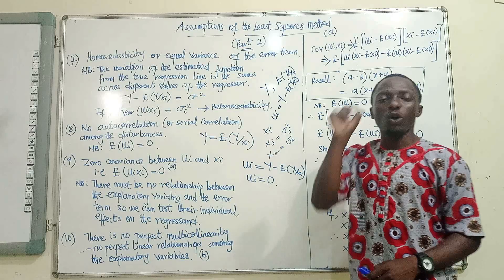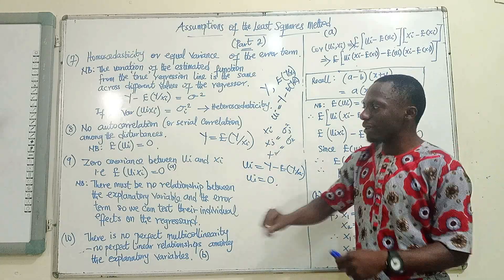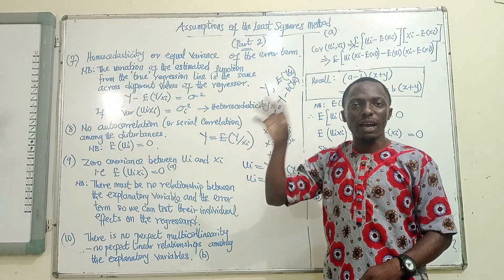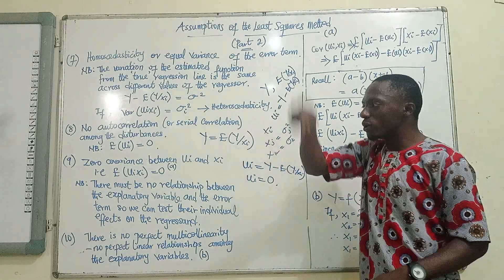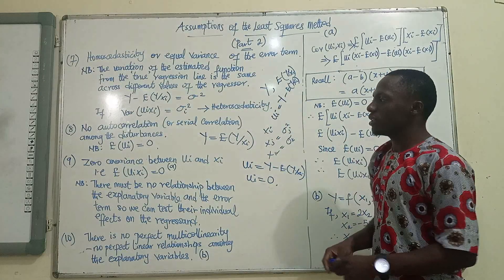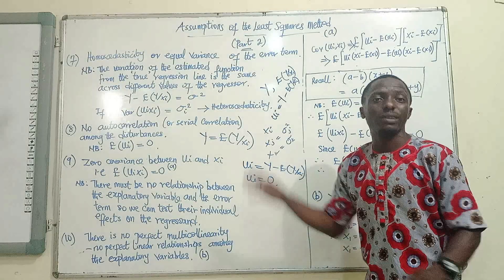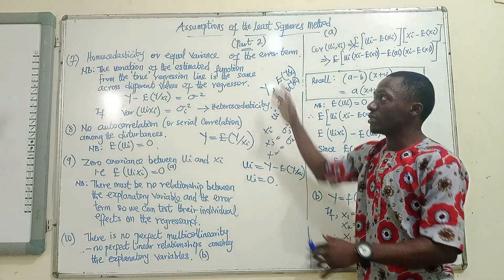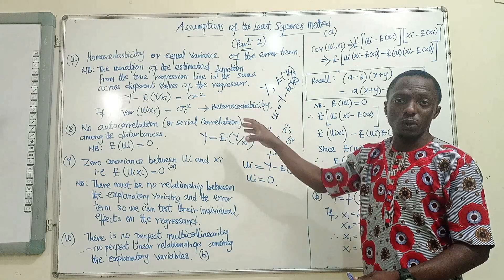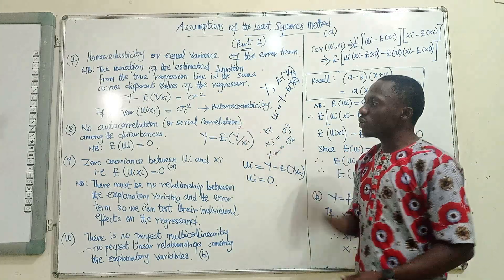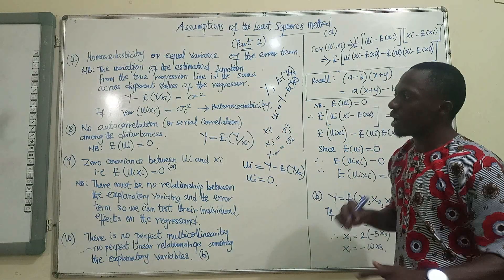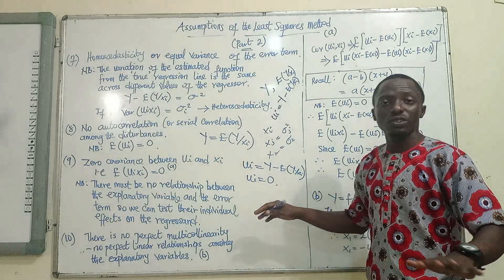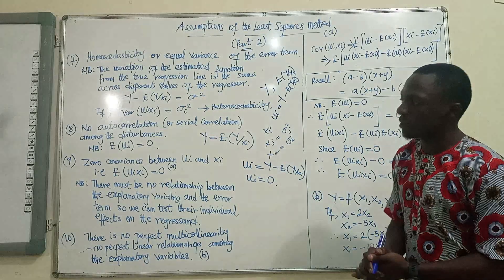When there is autocorrelation, it simply implies that the mean effect of the error term on the dependent variable can never be equal to zero. That will give us problems in the analysis using the Ui. So the Ordinary Least Squares method assumes there is no autocorrelation, no serial correlation among the disturbances.